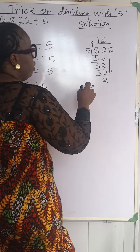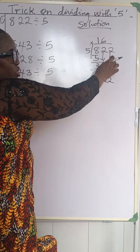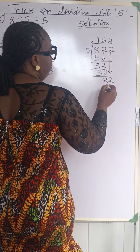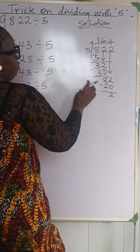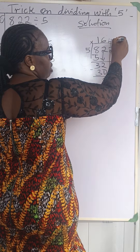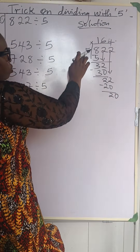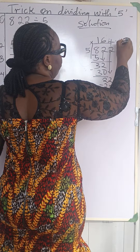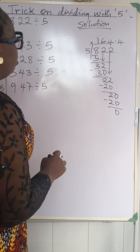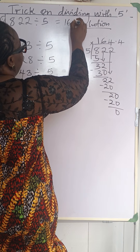It's going to be a decimal, so you bring down your 2 to make 22. 5 going into 22 is 4 times, so you put your 4 here. 4 times 5 is 20, take away and bring down 2. 5 going into 2 cannot, so we put 0 there and place a decimal point to show this 0 was not initially there. Then 5 going into 20 gives us 4. 4 times 5 is 20, take away is 0. So our answer is 164.4.